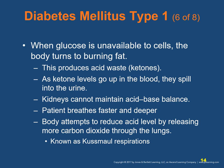When glucose is unavailable to cells, the body turns to burning fat. When the body burns fat rather than glucose, it produces acid waste or ketones. As ketone levels rise in the blood, they spill into the urine. The kidneys become saturated with glucose and ketones and cannot maintain an acid-base balance. The patient breathes faster and deeper as the body attempts to reduce acid levels by releasing more carbon dioxide through the lungs — this is known as Kussmaul respirations.